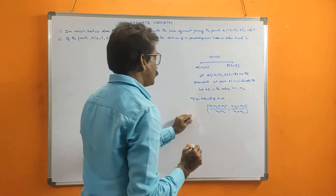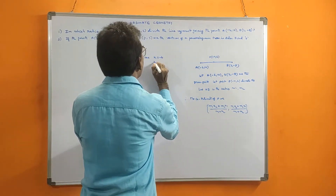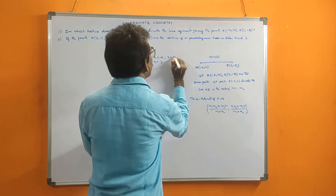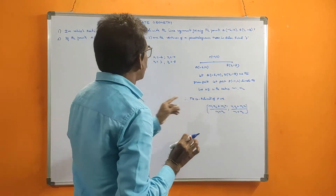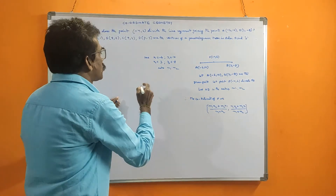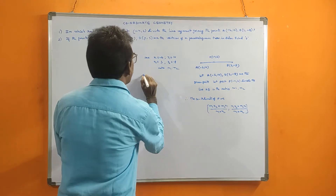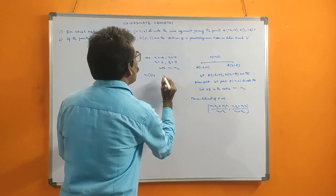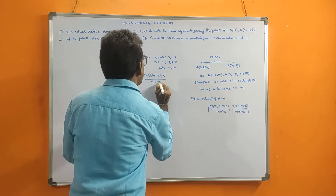This is the formula. Now, x1 is equal to -6, x2 is equal to 3, y1 is equal to 10, y2 is equal to -8, and the ratio is M1 to M2. Substituting: M1 into x2, which is 3, plus M2 into x1, which is -6, divided by M1 plus M2, comma.